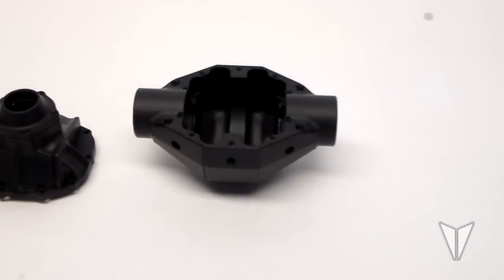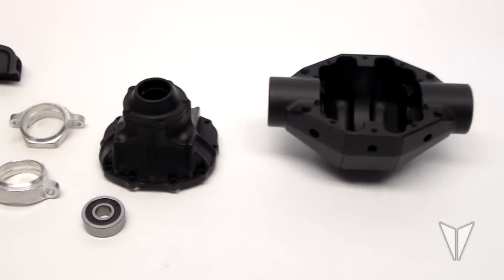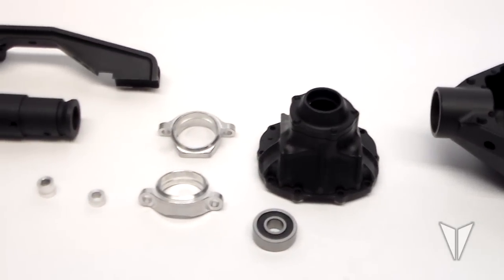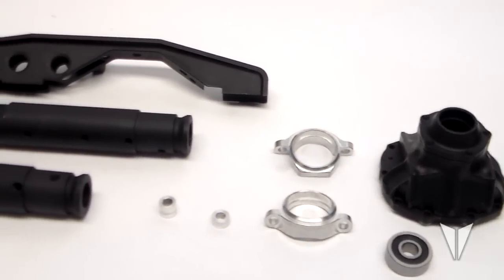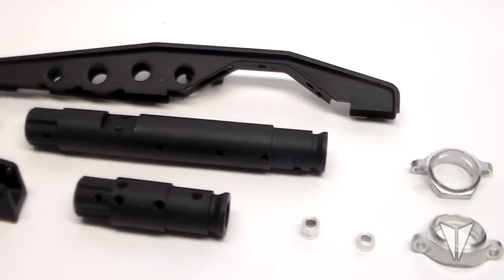Included in the kit are the axle pumpkin, third member, oversized pinion bearing and bearing retainers, truss and axle tubes, and lower suspension mounts.